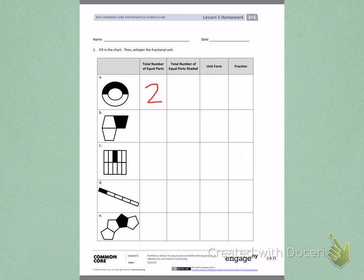Next, the next column tells me to write the total number of equal parts shaded. When I look back at letter A, I see that there is one part shaded.